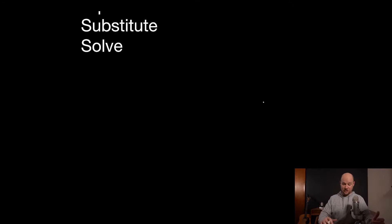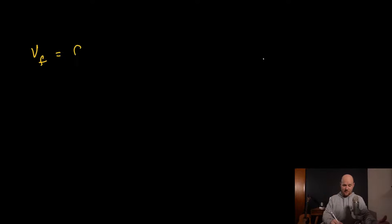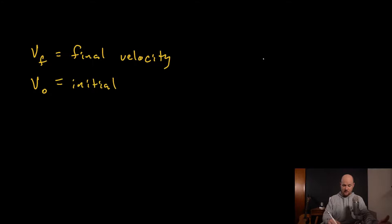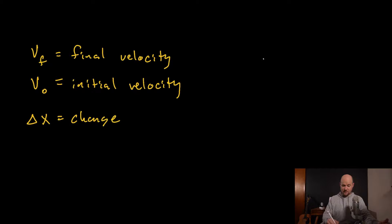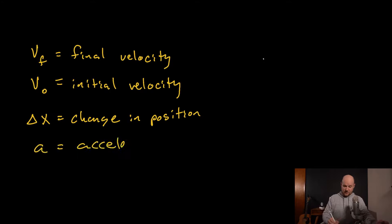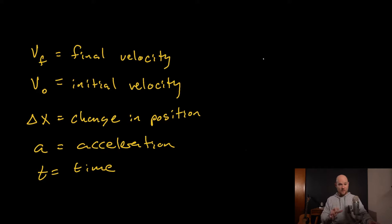Before jumping into a problem, here are some key variable definitions. 'vf' means final velocity; 'v₀' (v-naught) means initial velocity; 'Δx' means change in position — sometimes written as xf or x-naught; 'a' means acceleration; and 't' means time. Keep those handy — write them down if needed.